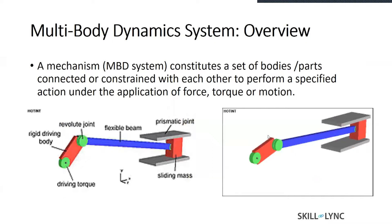I'm considering a flexible beam. This blue part you can see here is a flexible beam. This flexible beam is connected to this sliding mass, which is sandwiched between these two gray blocks, using this prismatic joint. Prismatic joint is a sliding or translation joint. The other end of this flexible beam